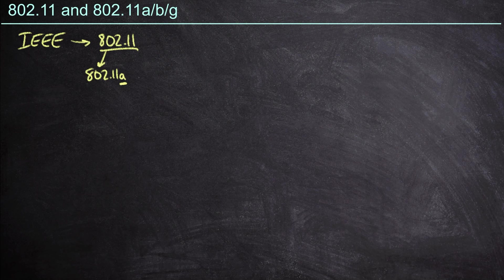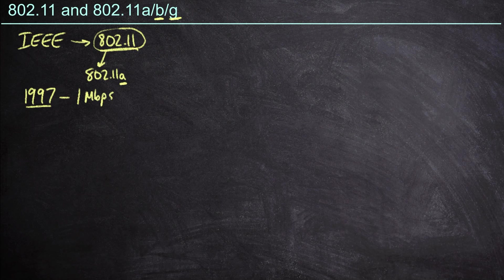So we had 802.11a, and as we see here, we've got 802.11b and 802.11g to talk about. There have been many enhancements over the years, but it all started with the original specification, 802.11. 802.11 was introduced all the way back in 1997. Even in the 90s we had wireless Ethernet networking, but as you might imagine, it was pretty limited — one megabit per second and two megabits per second, and that was it.